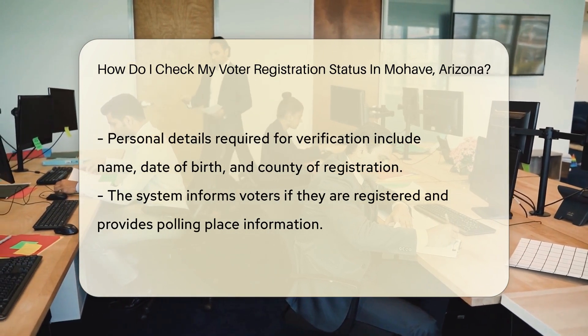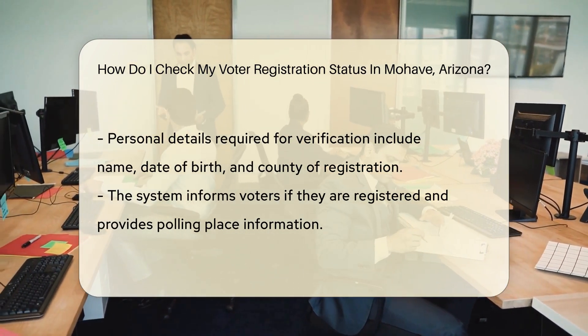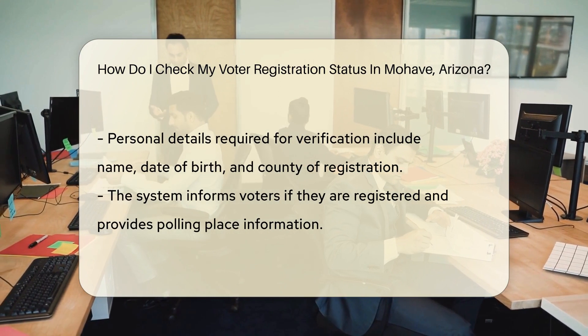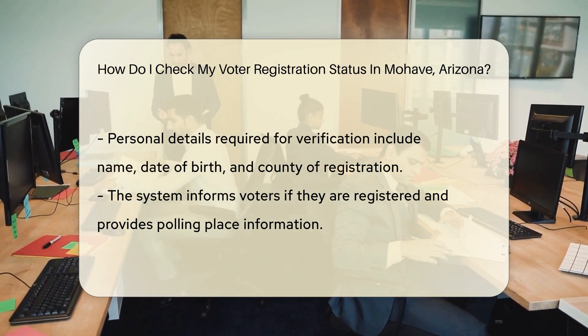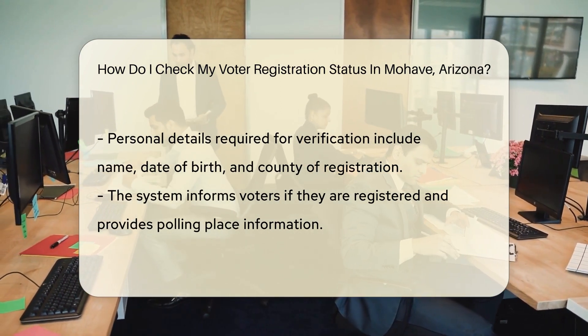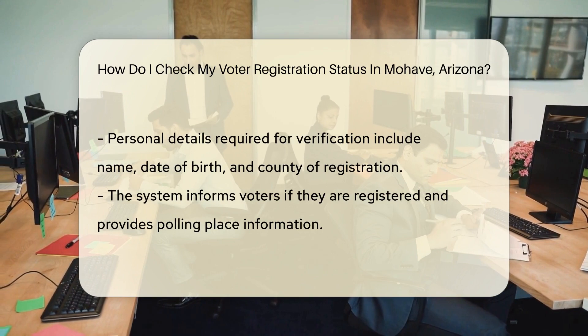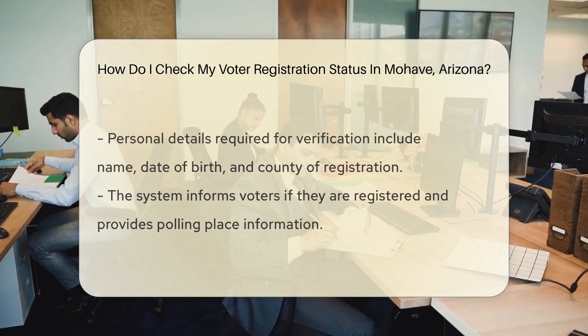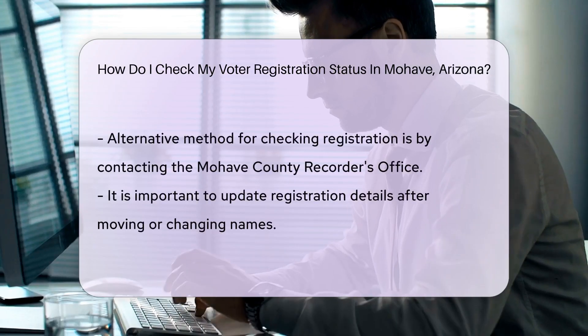Once you click on Voter View, you'll be prompted to enter some personal details. It's just to verify your identity and ensure you're you. You'll need to provide your name, date of birth, and the county you're registered in.